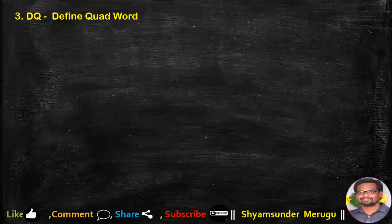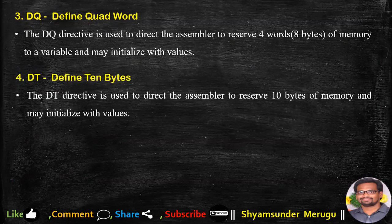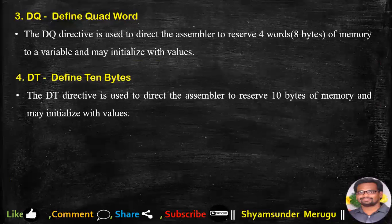DQ stands for Define Quad Word. The DQ directive directs the assembler to reserve 4 words of memory for a variable and may initialize with values. DT stands for Define 10 Bytes. The DT directive directs the assembler to reserve 10 bytes of memory and may initialize with values.